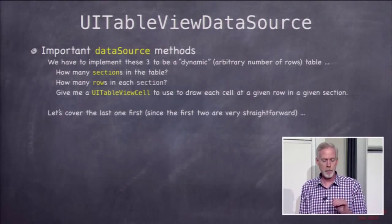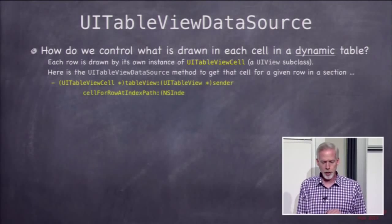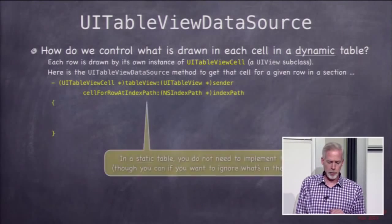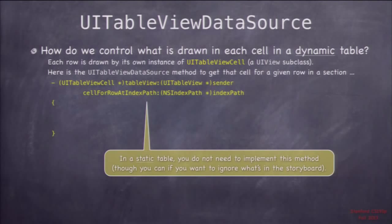The third method in the data source protocol is called tableView:cellForRowAtIndexPath. It's kind of exactly what you'd expect once you understand that index path is just an object that describes the section and row within that section. Index path has two properties: row and section. So that argument is basically just encapsulating the row and section into one object.